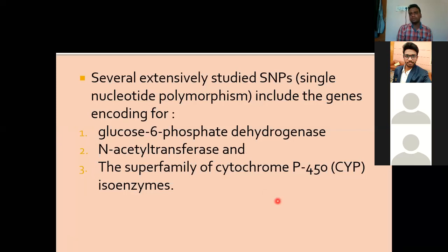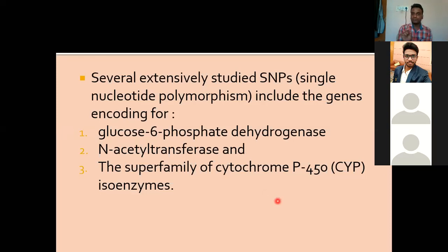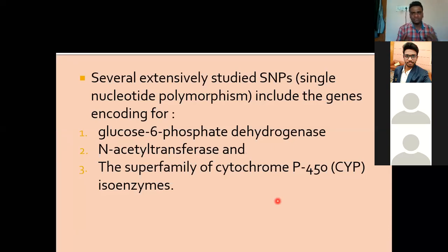When we talk about polymorphism here, we are talking about one specific type - not all kinds. We are talking about only one kind of polymorphism that we call SNPs, that is Single Nucleotide Polymorphism. I hope you know the meaning of nucleotide and nucleoside, and how DNA is formed. Can anyone recap it very quickly?